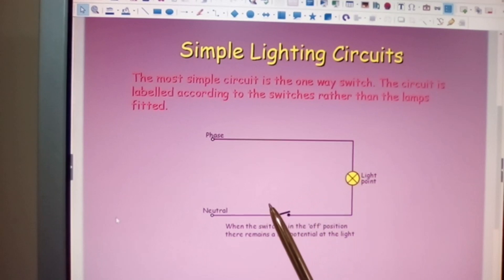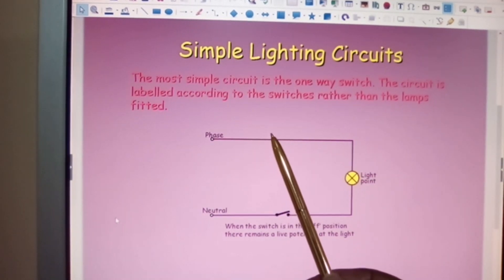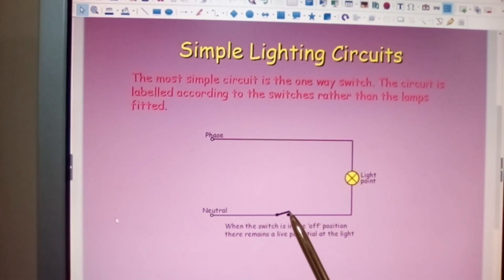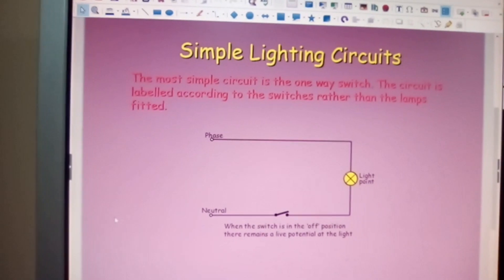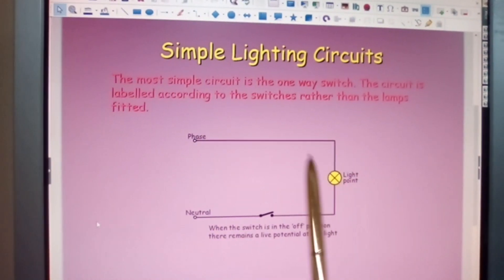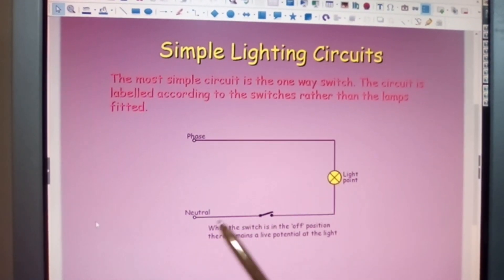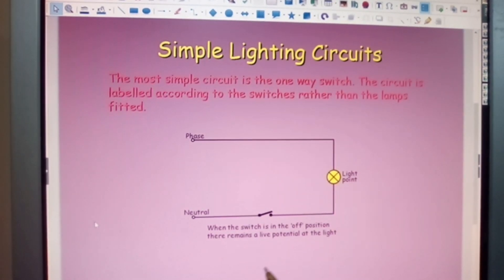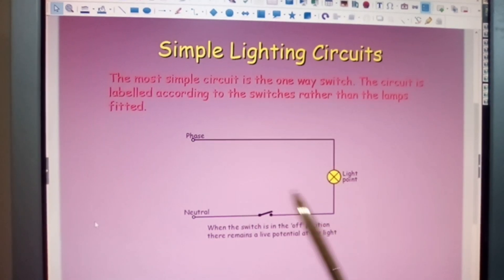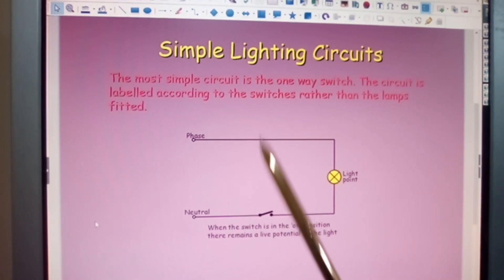So you will not wire a light like this. The switch should always be in the phase conductor, not the neutral. Now I don't know why they've done it this way, but it's possible somebody trying to illustrate a point. So the switch always in the phase conductor.